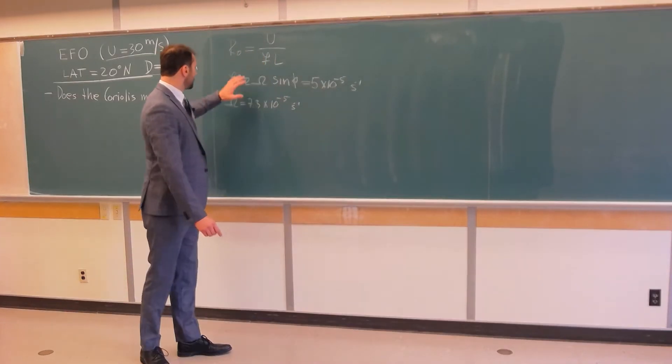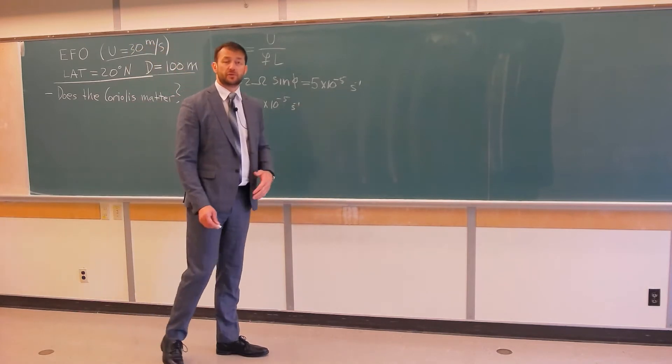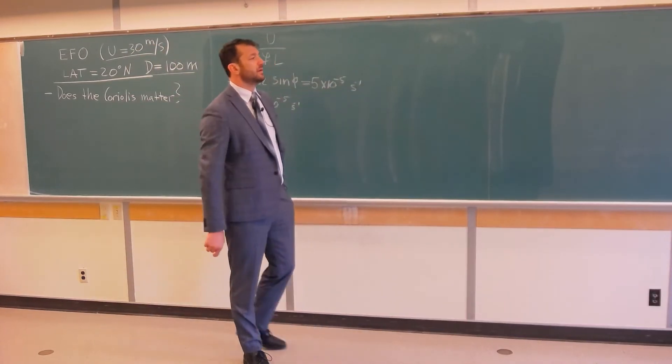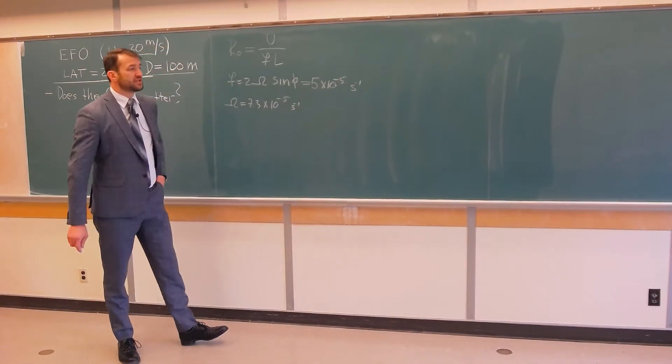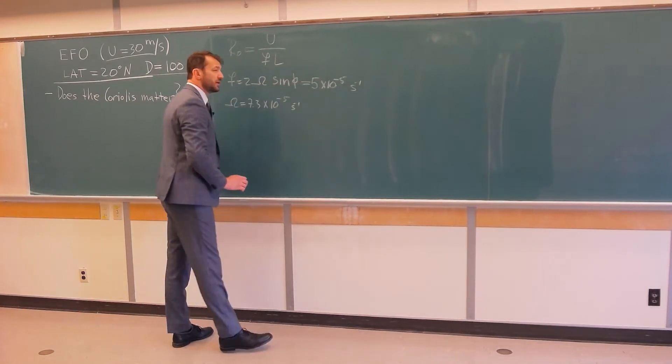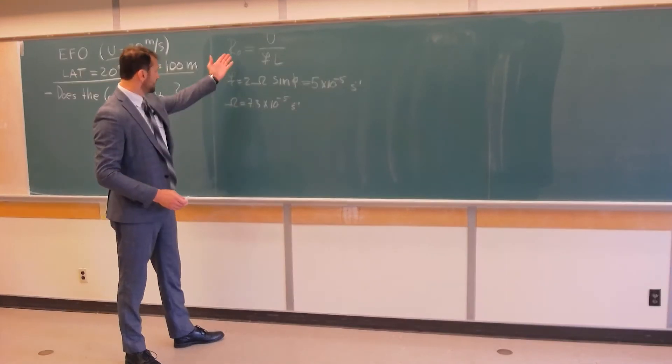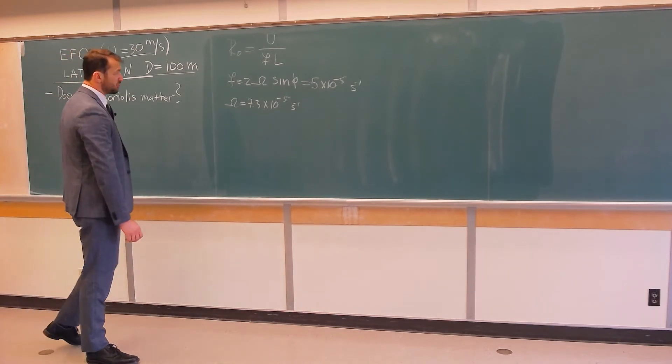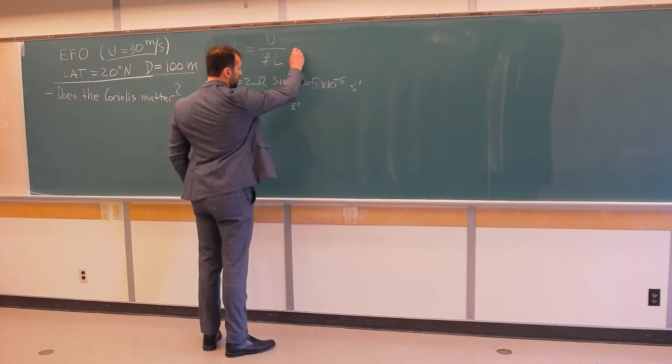And, if the Rossby number is below 1, which can happen often in oceanography, then Coriolis force is even more dominant than the inertial forces. So, when we get result, judging on the value of this number, we can answer this question, does the rotation of the Earth matter?